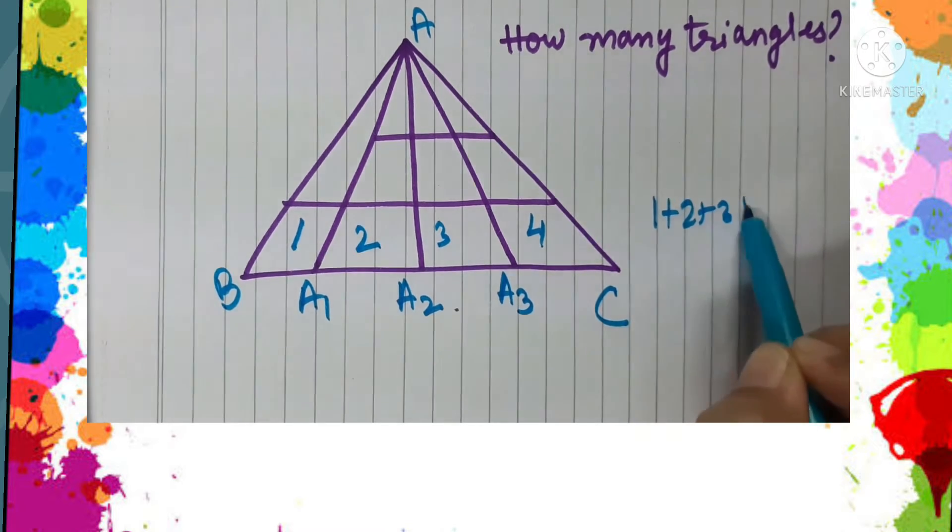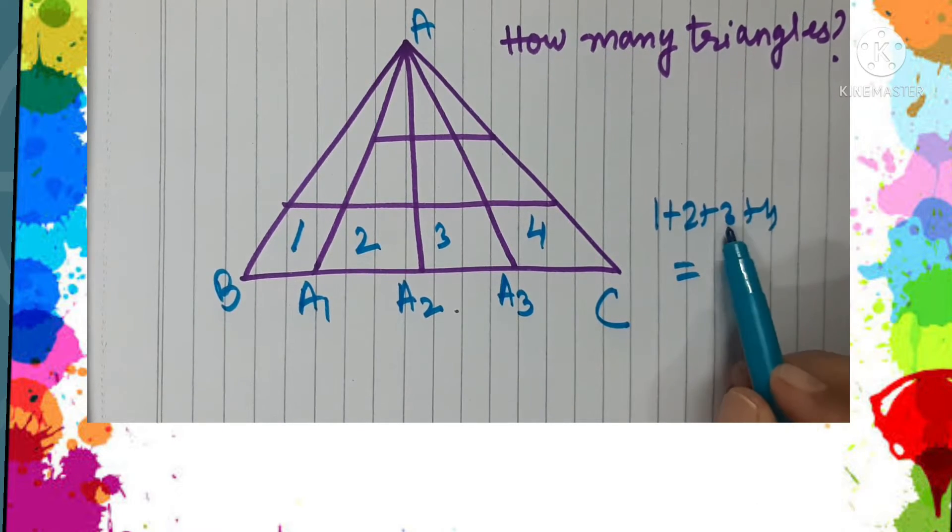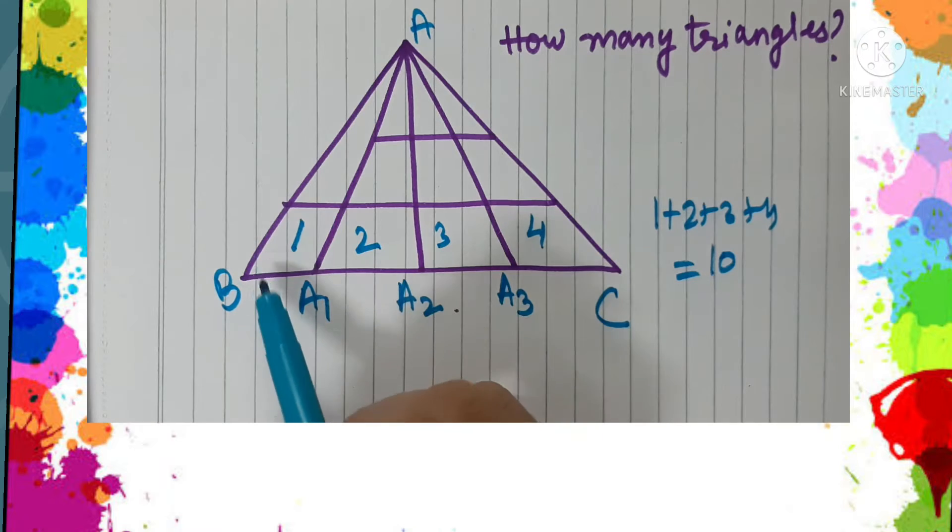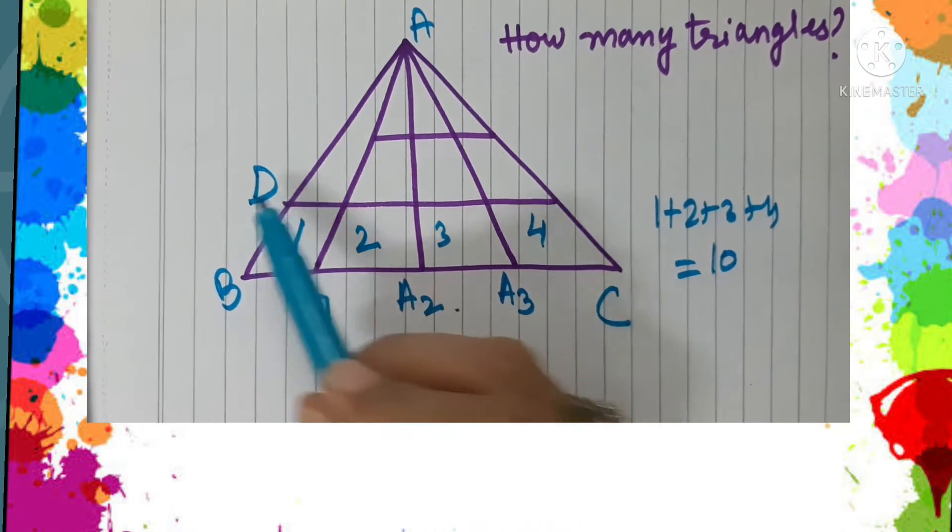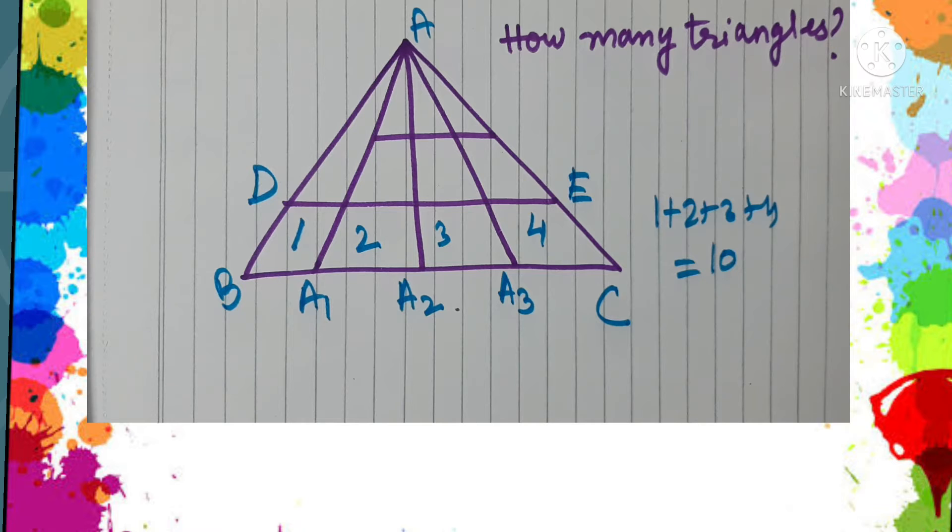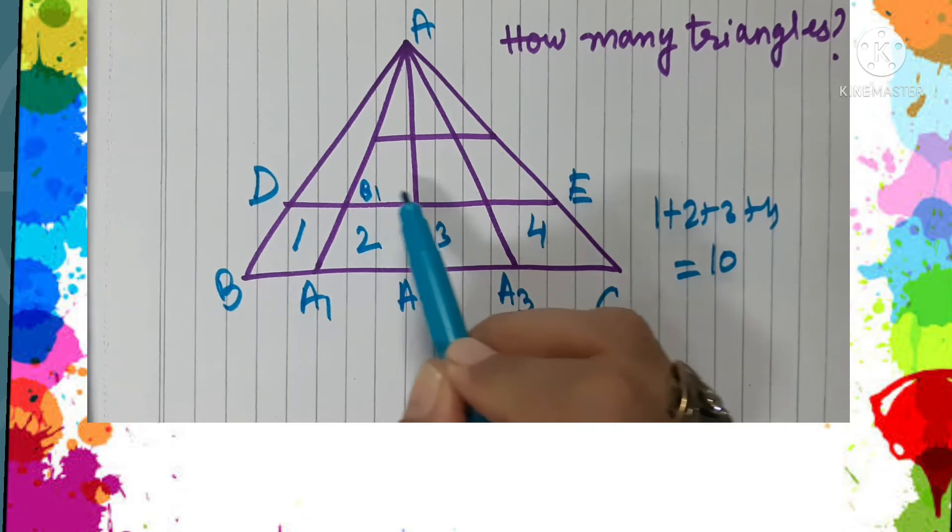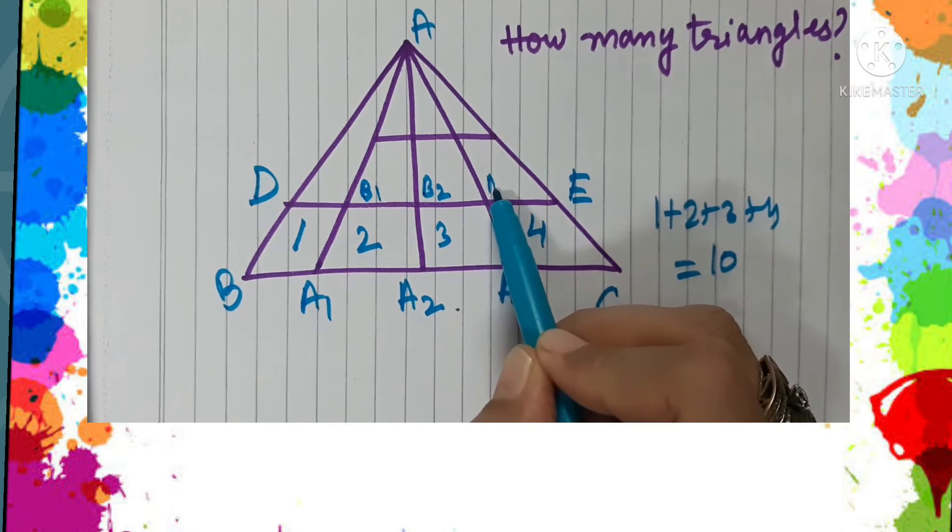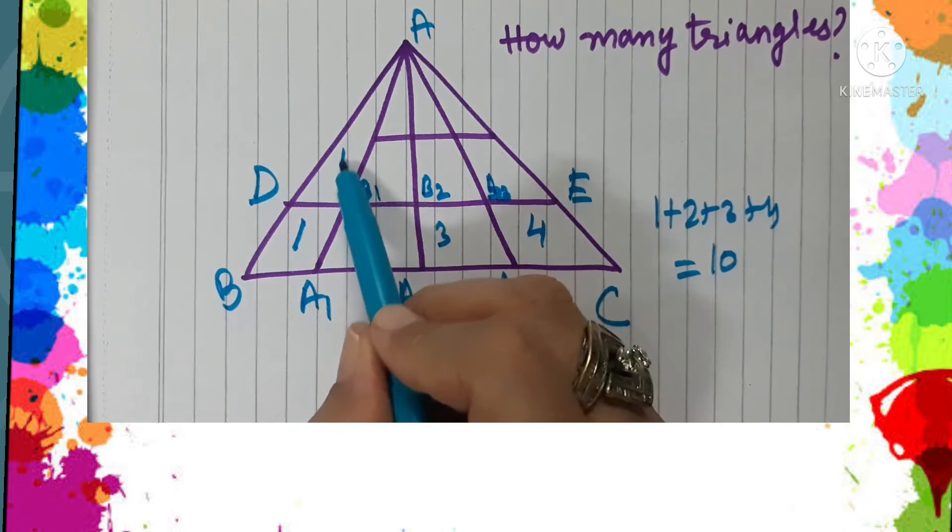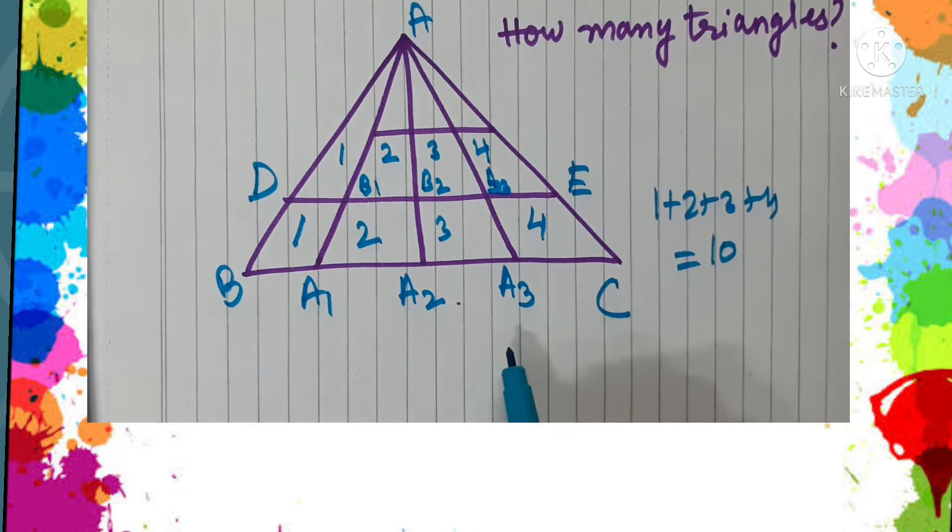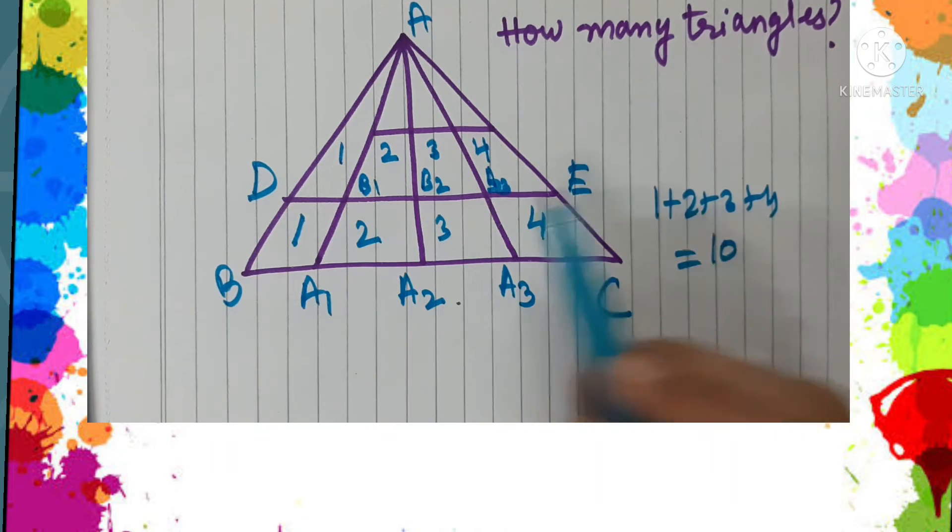Now you come to the second level and see the triangle ADE. If we see the triangle ADE, it is also divided into four parts with the line segments. We can name it as ab1, ab2, and ab3. So these are the four parts of the triangle ADE, so the number of triangles here also will be equal to 1 plus 2 plus 3 plus 4, which is 10.